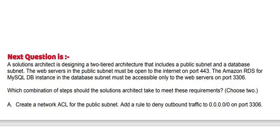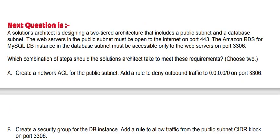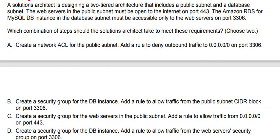Next question: A solutions architect is designing a two-tier architecture that includes a public subnet and a database subnet. The web servers in the public subnet must be open to the internet on port 443. The Amazon RDS for MySQL DB instance in the database subnet must be accessible only to the web servers on port 3306. Which combination of steps should the solutions architect take to meet these requirements? Choose two.